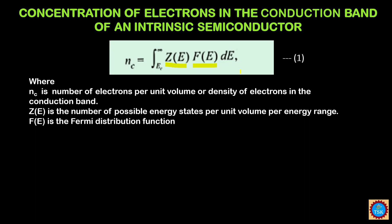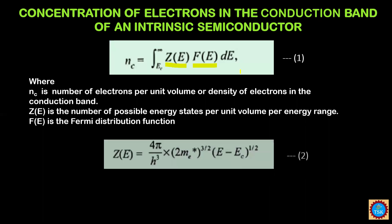Here, NC is the number of electrons per unit volume, or the density of electrons in the conduction band. Z(E) is the number of possible energy states per unit volume per unit energy range. Z(E) can be written as (4π / h³) × (2Me*)^(3/2) × (E − EC)^(1/2). This is equation number 2.